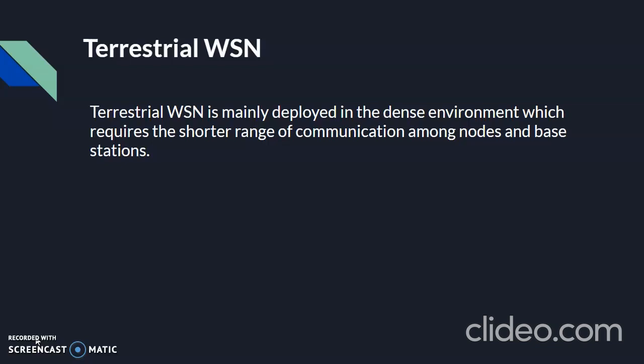In Terrestrial WSN, the battery power is limited. However, the battery is equipped with solar cells as a secondary power source. The energy conservation of WSN is achieved by using low-duty cycle operation, minimizing delay, and optimal routing.